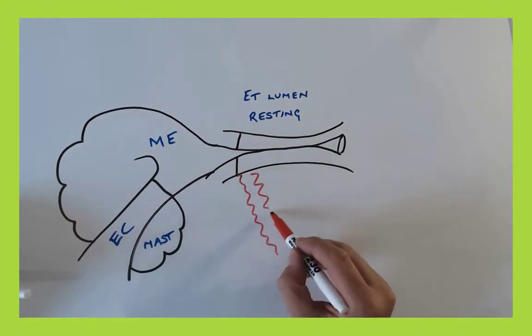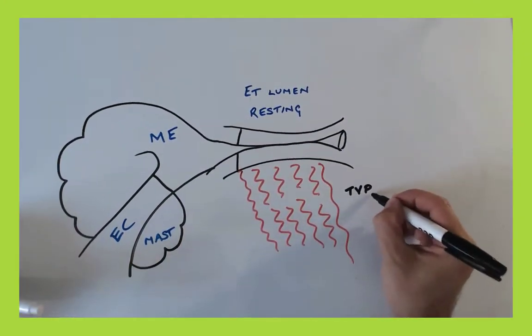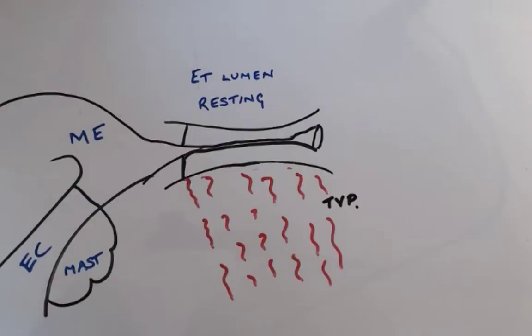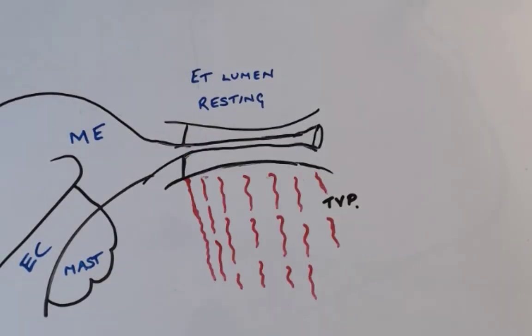You can also see how the tensor veli palatini muscle is connected to the eustachian tube. As we swallow the tensor veli palatini muscle contracts.